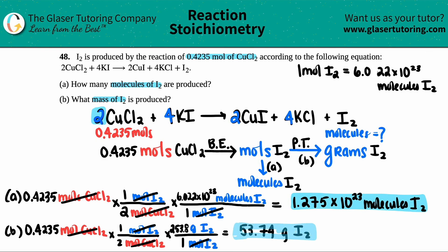Now, just know that the first answer, the molecule one, and the second one is the same quantity. It's just a different unit. Both of them say that if you started off with 0.4235 moles, you would either produce this amount in molecules, or you'll produce 53.74 grams of I₂. And that's it.